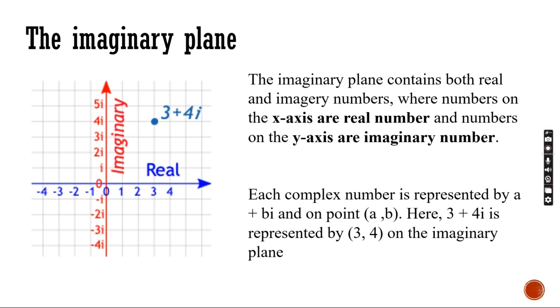The imaginary plane contains both real and imaginary numbers, where numbers on the x-axis are real numbers, and numbers on the y-axis are imaginary numbers. In the point represented above 3 plus 4i, 3 is represented on the real axis, and 4i is represented on the imaginary axis.